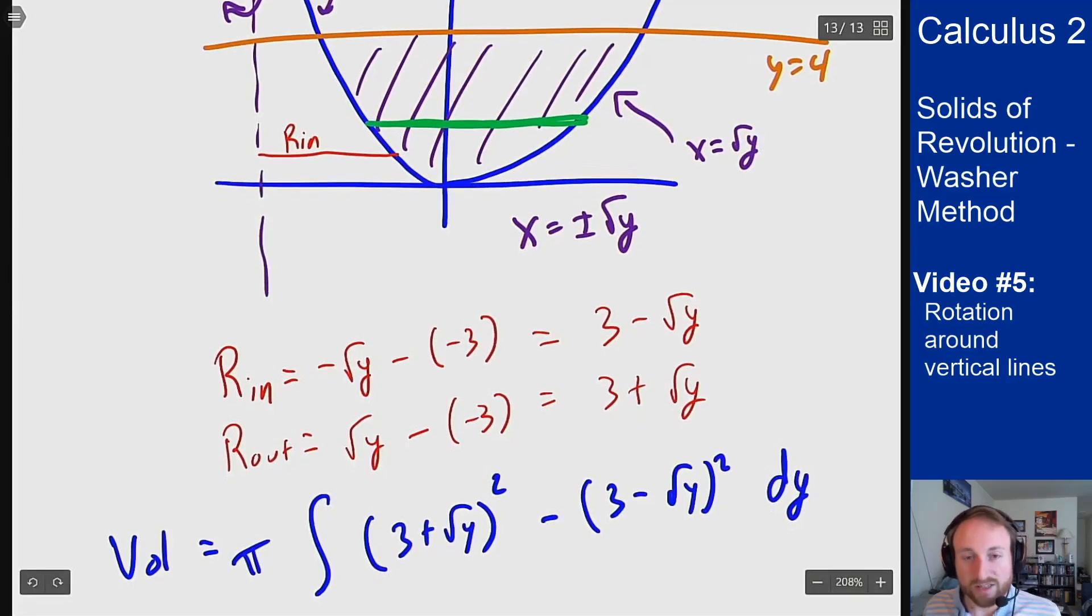Now what are my bounds on this integral? Well these are bounds in y, so what values of y make up this area? Well it's from y equals 0 up to the top line at y equals 4. Right here I did not need to figure out that the intersection points were at 2 and minus 2 because that didn't matter for solving this problem. But now I can set this up, expand things out, and then try to solve this integral out from here.